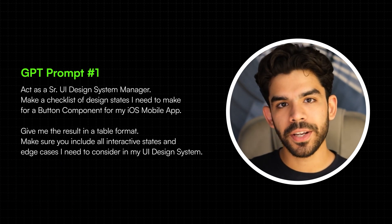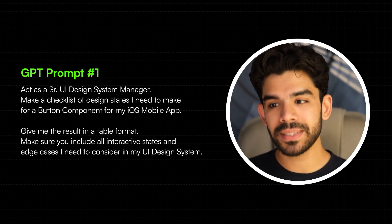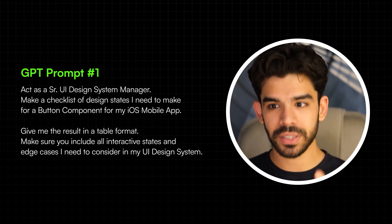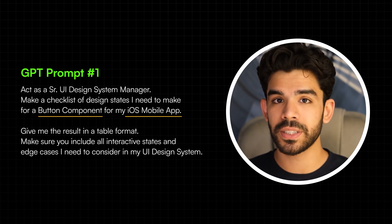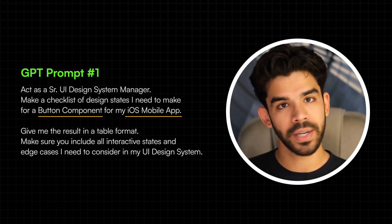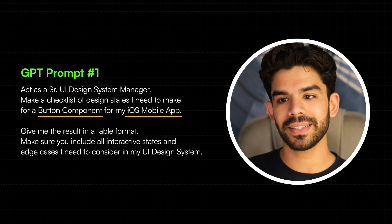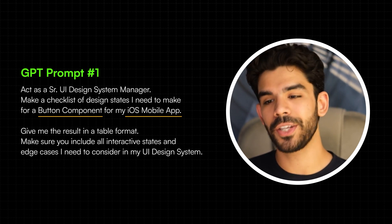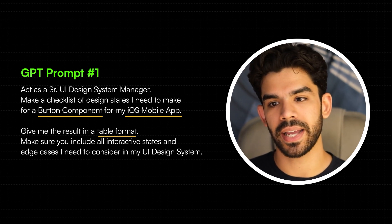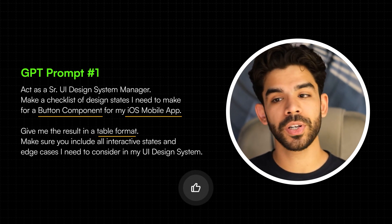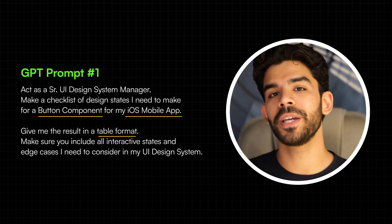Take note of how I request GPT to become a specific person and how I explicitly prompt to generate a list for just a button component for an iOS mobile app. You can be more specific and give a different component in a different context on a specific screen. Specifying the platform, device, and the exact component is very crucial. Then I ask for table format — it makes it easier to scan — and I prompted to include all interactive states and edge cases. Vocabulary plays a very big role here.